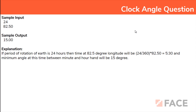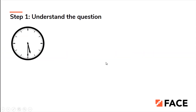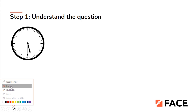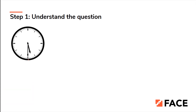For example, given input 24 and 82.5, we already know this gives 5.5 hours, which represents 5:30. We need to find the angle difference between the hour hand at 5 and the minute hand at 30 — which gives us 15 degrees. The basic idea is: first calculate IST, then find where the hour and minute hands point, and then find the angle difference between them.